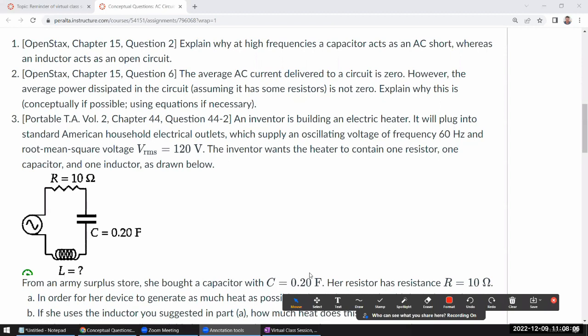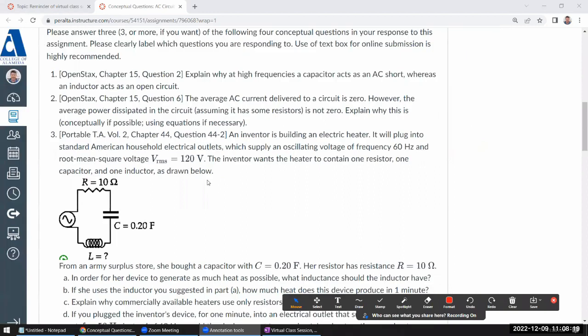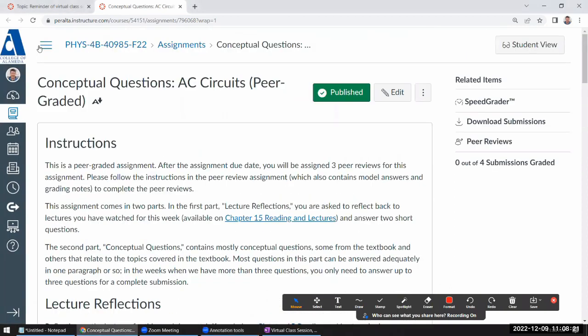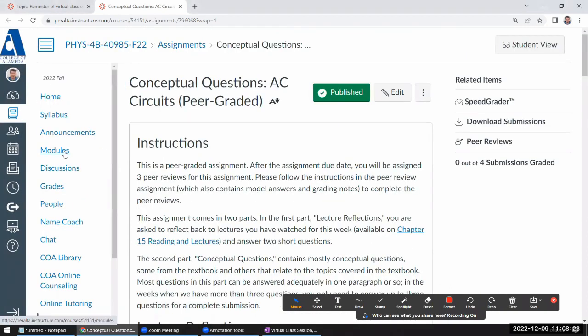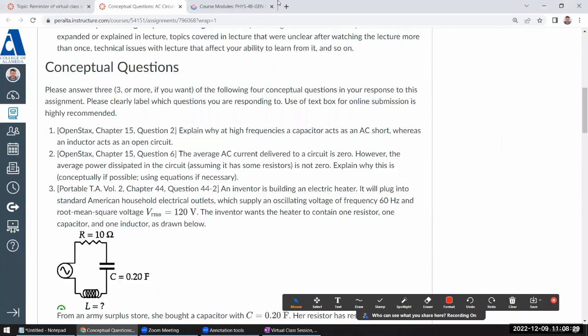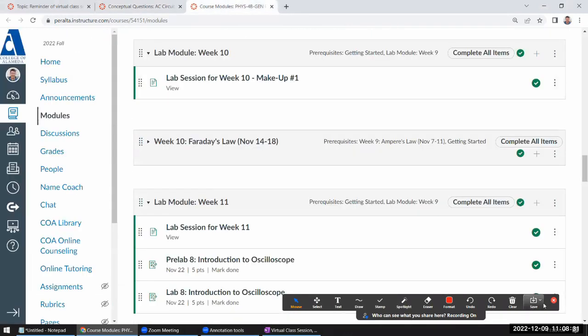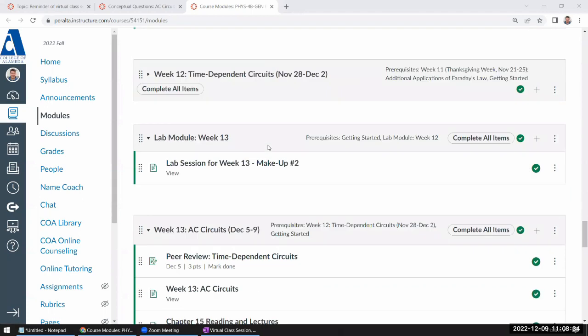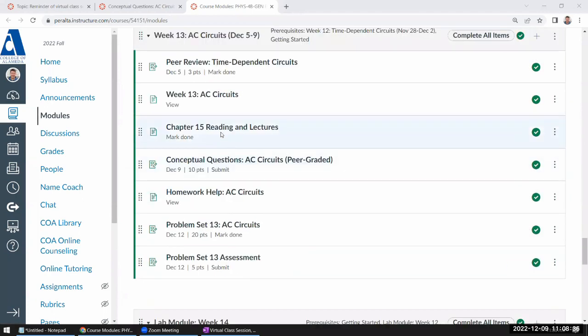Next question. The average AC current delivered to a circuit is zero, right? However, the average power dissipated in the circuit is not zero. Explain why this is. You know, this I did a more extensive lecture earlier, and I think that was the point of me covering. Let me just make sure you know where it is, because I think it's embedded into one of the longer lectures.